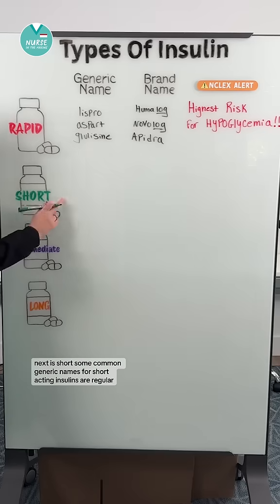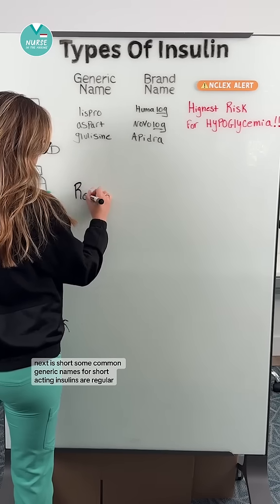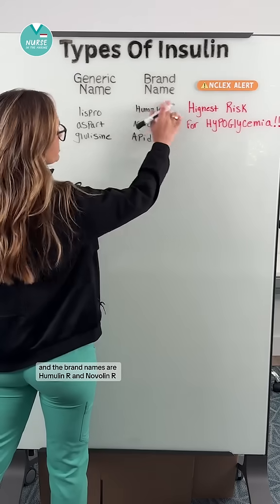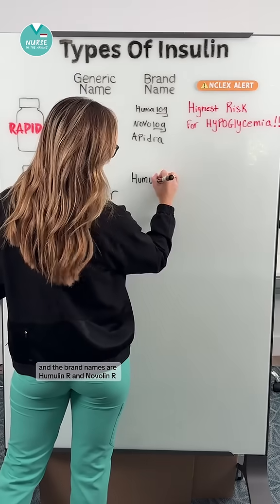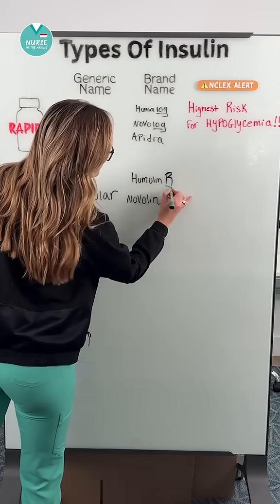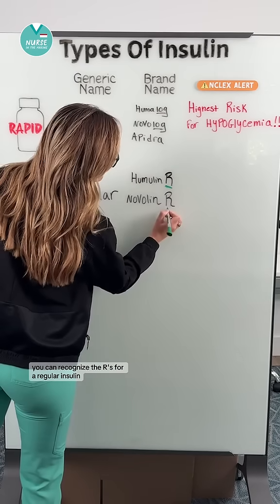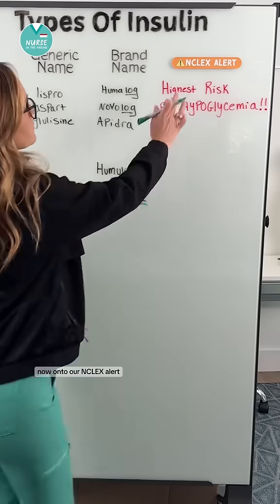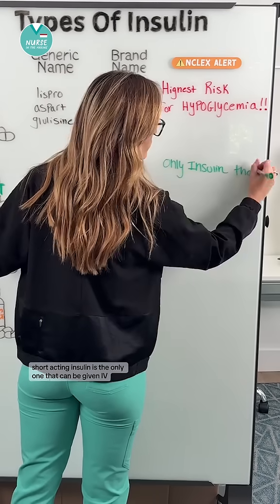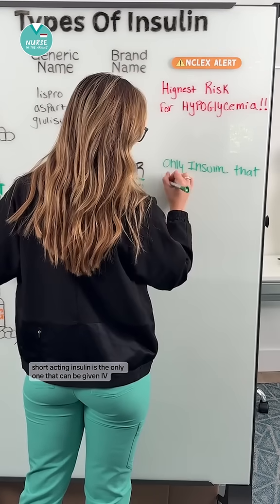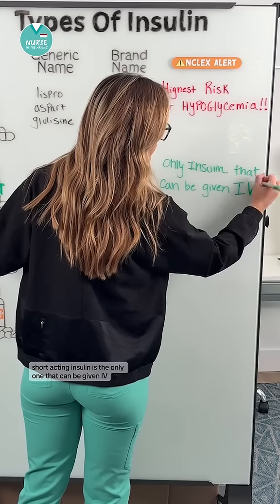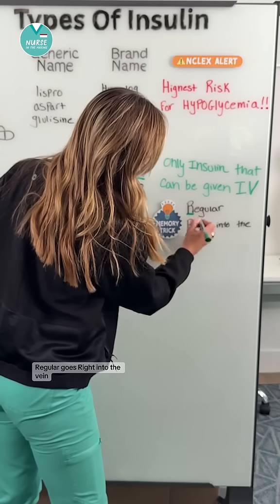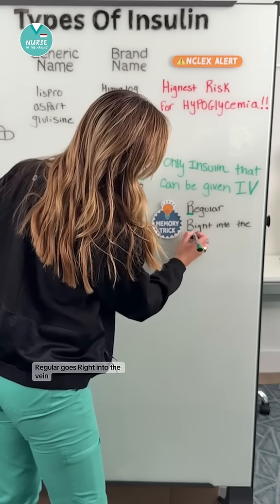Next is short. Some common generic names for short-acting insulins are regular, and the brand names are Humulin R and Novolin R. You can recognize the R's for regular insulin. Now onto our NCLEX alert: short-acting insulin is the only one that can be given IV. You can remember this by the memory trick — regular goes right into the vein.